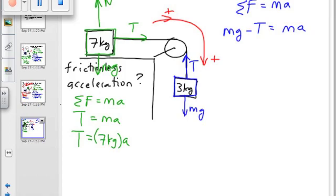And then we plug in our values. Three kilograms times gravity, 10 meters per second squared. Minus tension equals three kilograms times A. Ah, still two variables. What do we do with that?